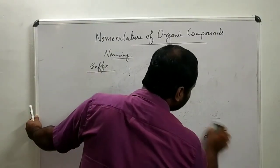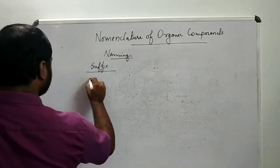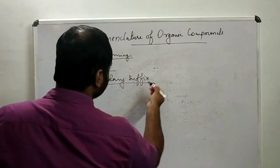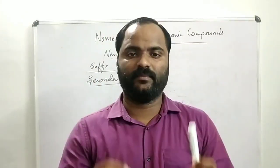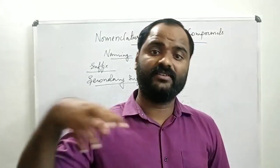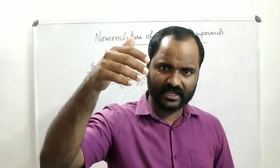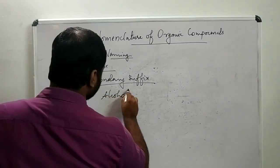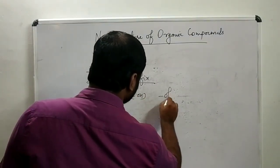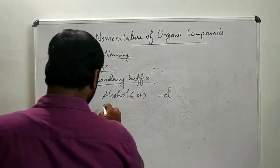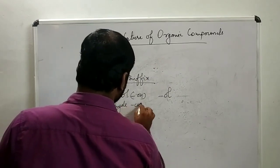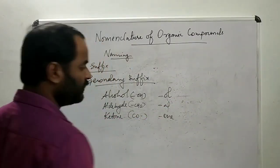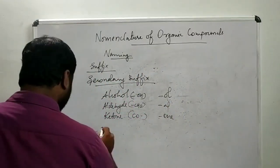Now we can move on to the secondary suffix. Secondary suffix is all about the functional group — how can we name suffix for a particular functional group, and what are the suffixes of different functional groups? For alcohol, the functional group is OH, and we use the suffix OL. For aldehyde, the group is CHO, and the suffix is AL. For ketone, the group is C=O, and the suffix is ONE.